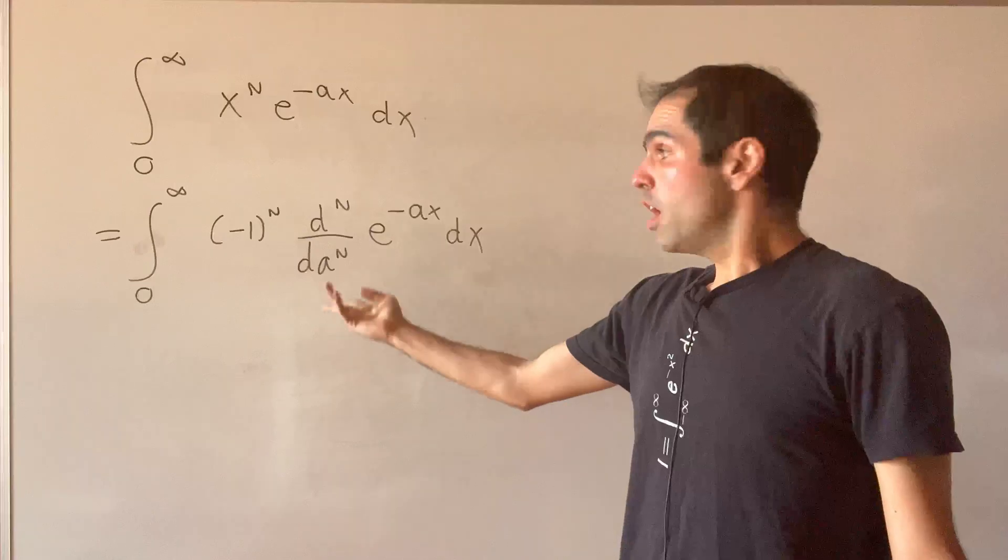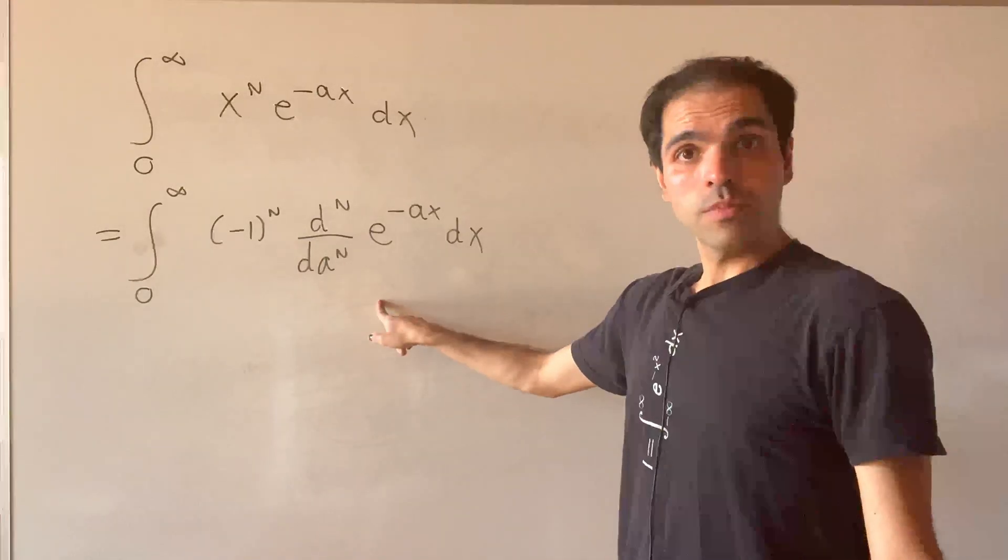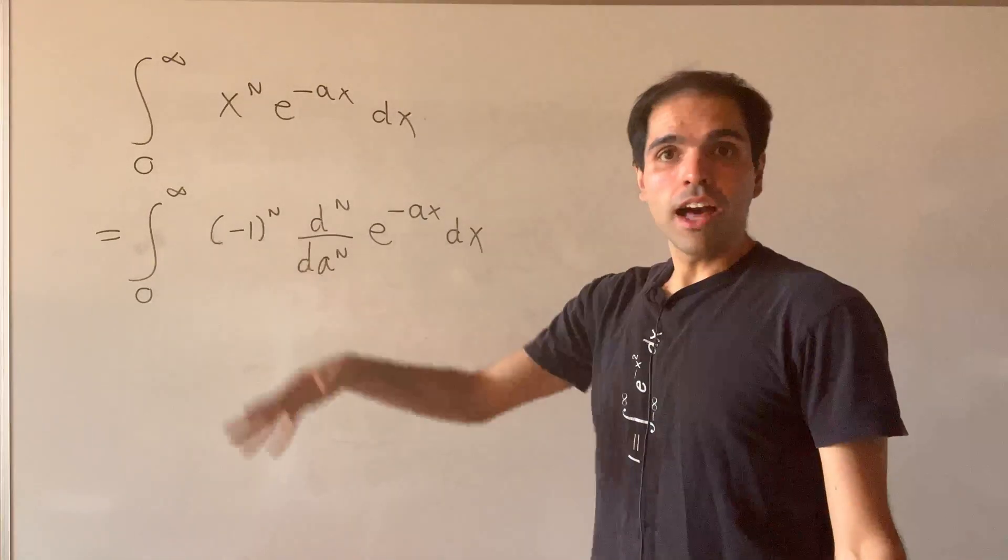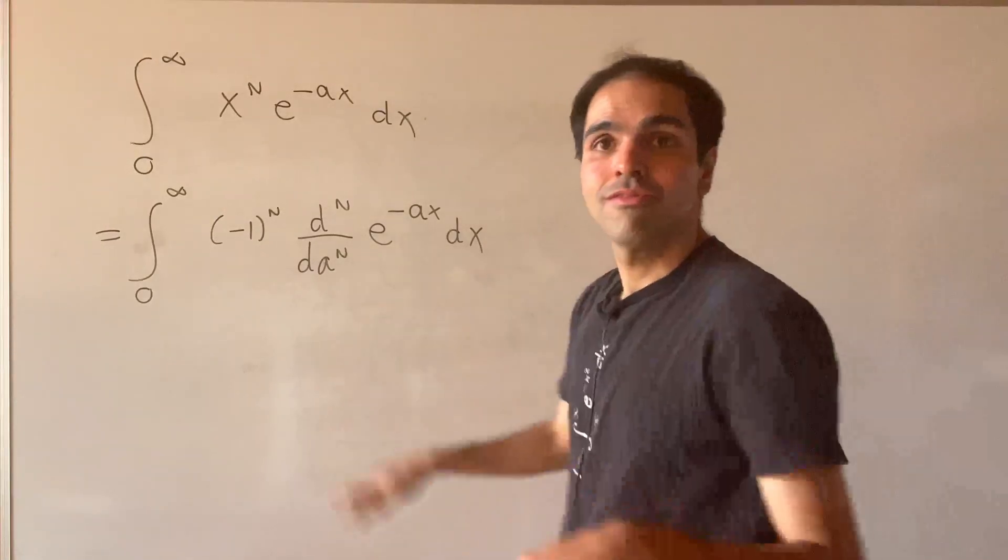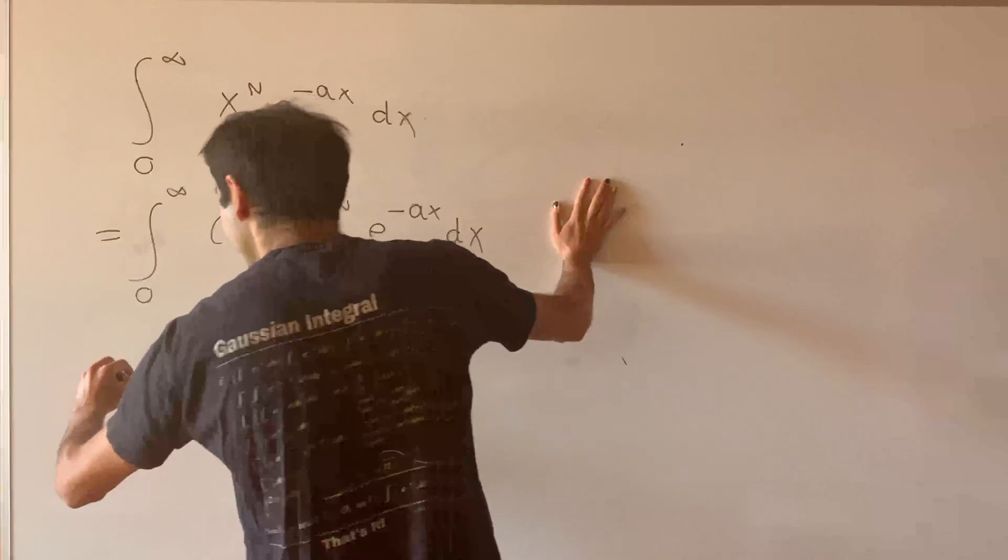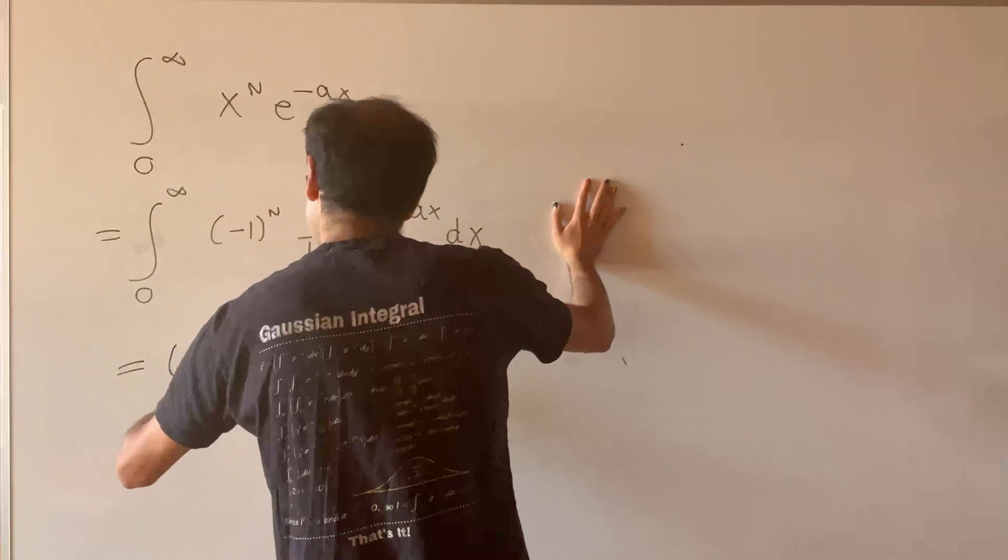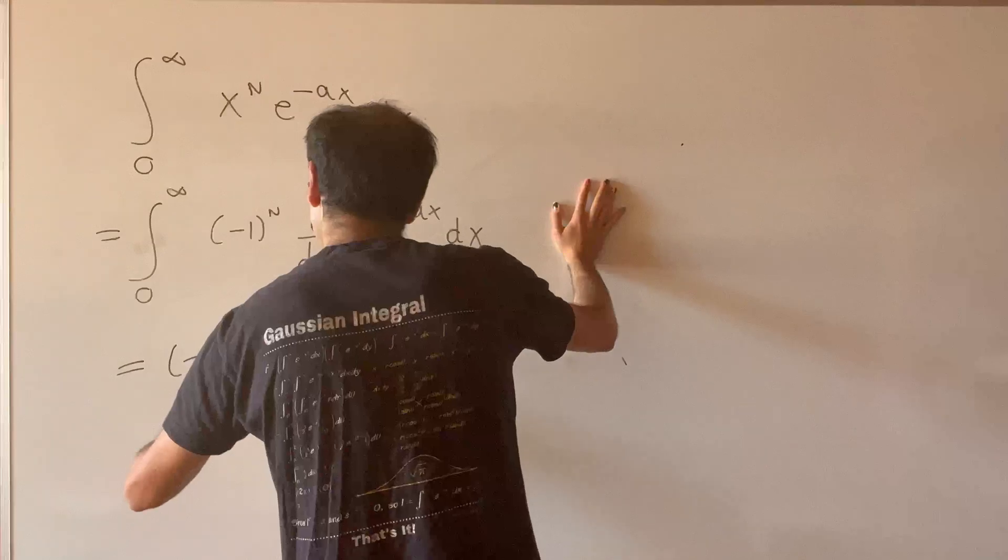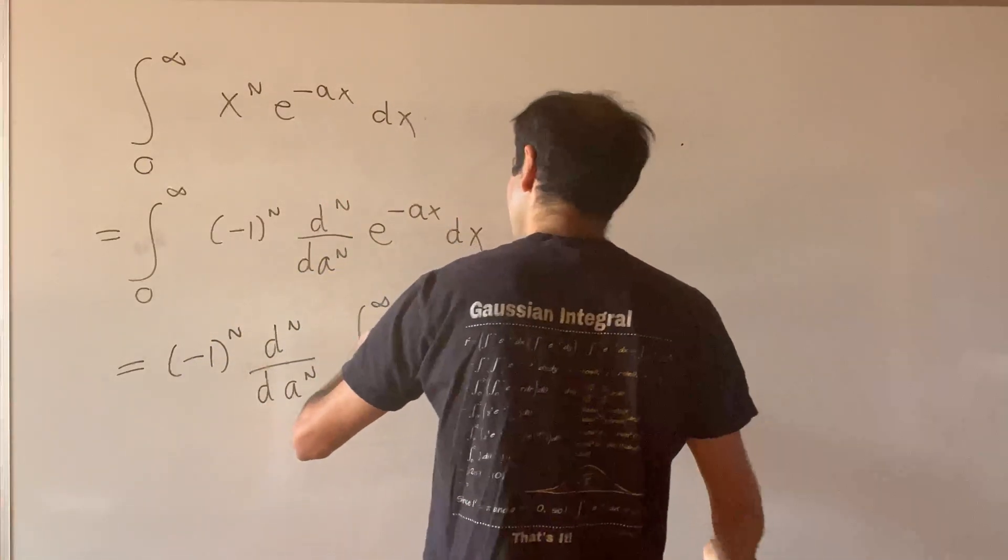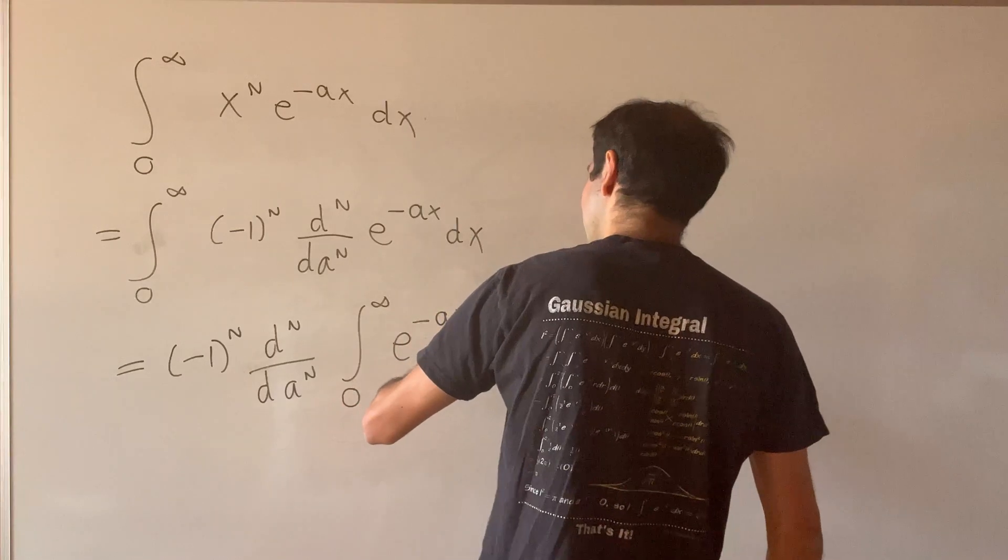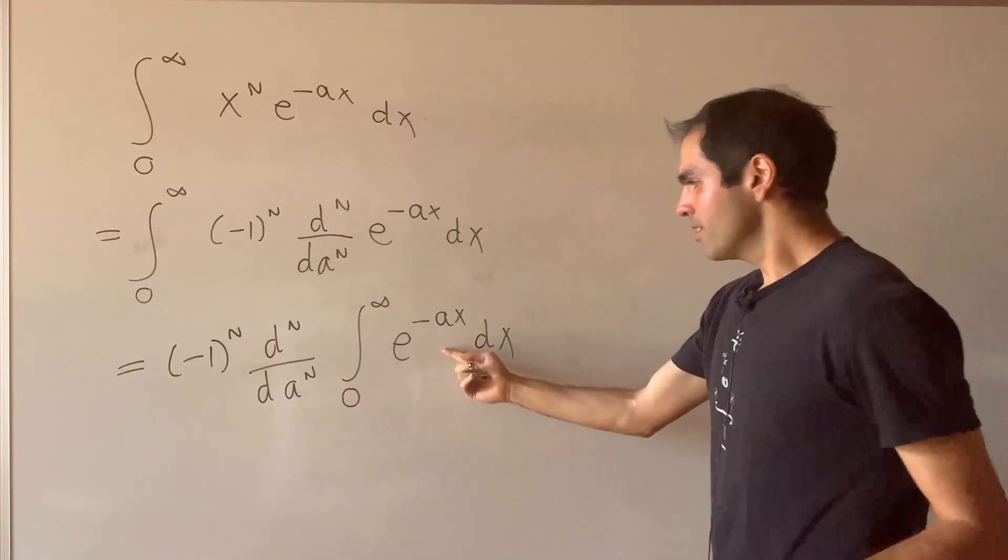So our integral just becomes the following, and the nice thing is we can just put the derivative outside, and everything converges fast to 0. This becomes minus 1 to the n times dn over da to the n of the integral from 0 to infinity of e to the minus ax dx.